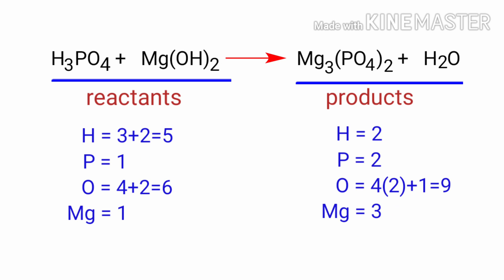If you look at this equation, the equation is not balanced. In the reactants side there are 5 hydrogen atoms, 1 phosphorus atom, 6 oxygen atoms, and 1 magnesium atom present.